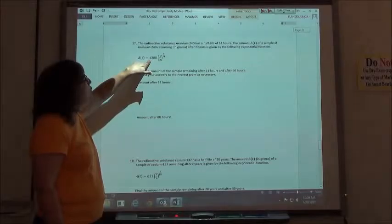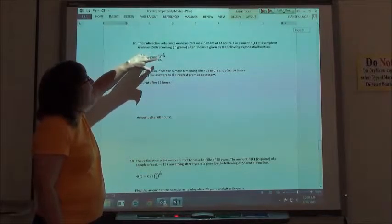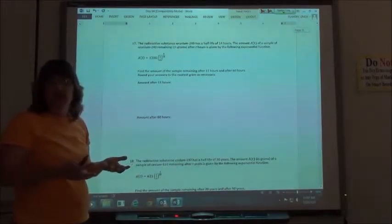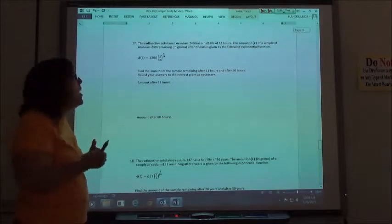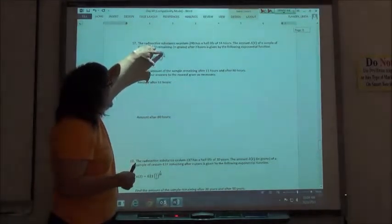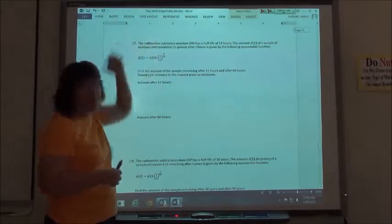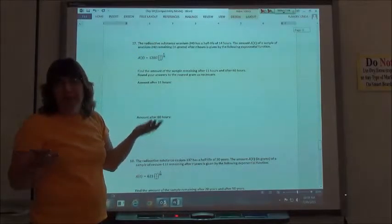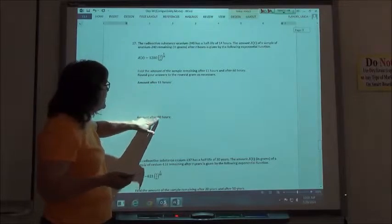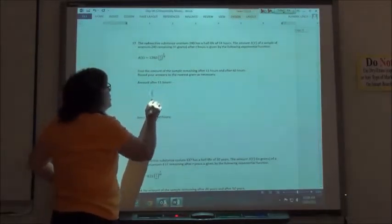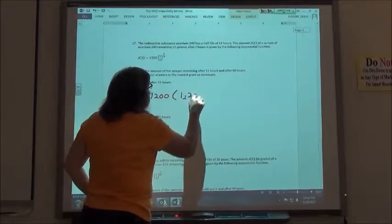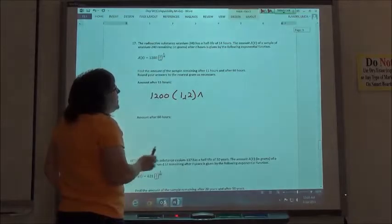Number 17, then, it says the radioactive substance uranium-240 has a half-life of 14 hours. The amount of the sample of uranium-240 remaining in grams after T hours is given by the following exponential function. So what they started out with was 1,200 grams. I'm doing half-life. I could put 50%. It's maintaining 50% of its value, or half its value, every 14 hours. So for one half-life, it would be 14 over 14.